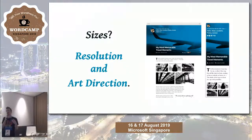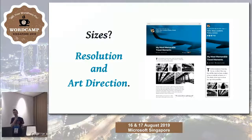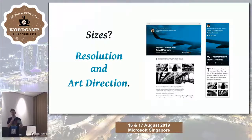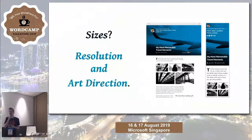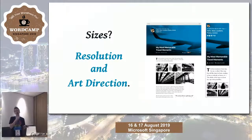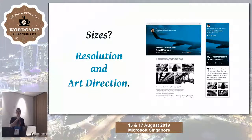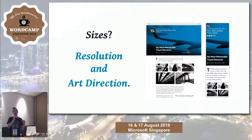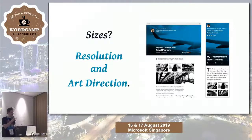Plugins and themes can also add additional sizes to the ones WordPress generates, for art direction or different resolution reasons. For example, if you want an image to be presented as a logo but also used on an about page, you can use the same original image and have it cropped differently automatically by WordPress at upload time.